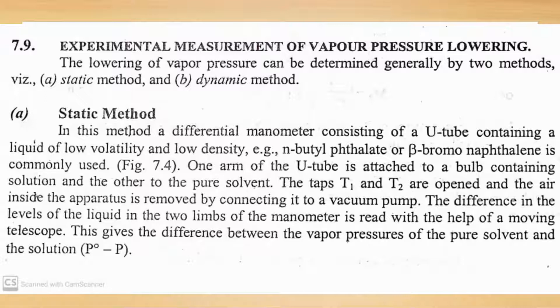If out of ten, suppose three are solute molecules and seven are solvent molecules. Now the solute is non-volatile, so it will not convert to vapors. Only the solvent will change to vapors, and its number will be seven.